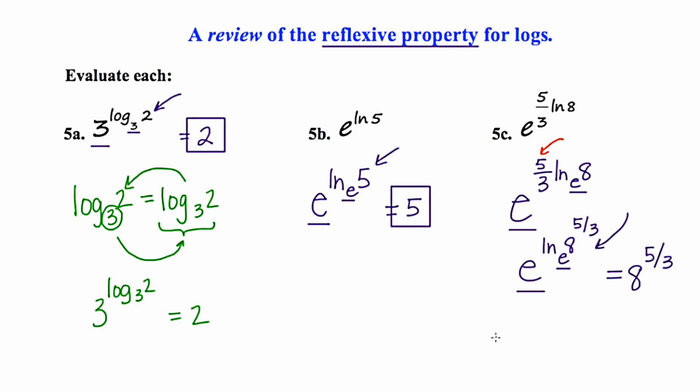There's probably an expectation that you simplify this. The denominator of our fractional exponent becomes the index of our radical, so this is the cube root of eight, which is two, and two to the fifth is 32. Hopefully this review of the reflexive property for logs has helped you recall the property, and we will use it in the next example.